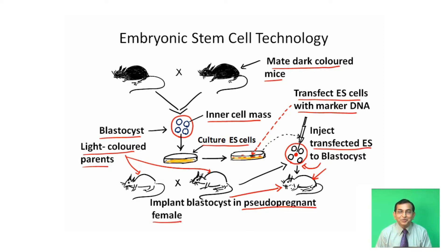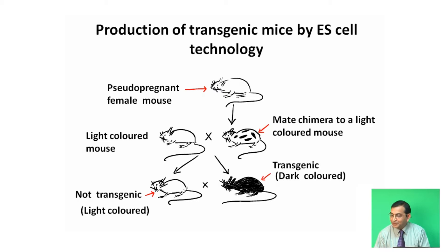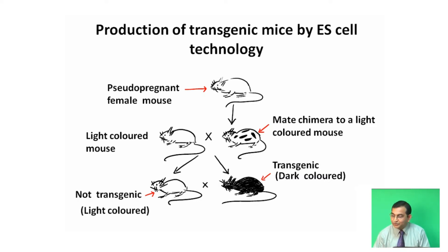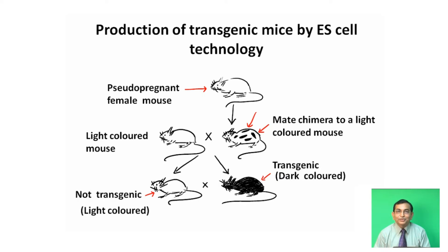What is a pseudo-pregnant female? Pseudo-pregnant female means a female mated with a vasectomized male, so it is called a pseudo-pregnant female. These pseudo-pregnant females give birth to chimeras. These chimeras, or colored mice, have some transgenic cells and some normal cells, so these are called chimeric mice.